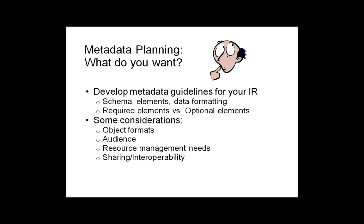When creating your guidelines, think about the schema, the metadata elements, and the metadata values you want. For example, do you have a preferred schema — would you prefer MODS for its richness, or something simple like Dublin Core? What specific elements do you want and why? How do you define those elements? For instance, should all contributors be considered authors or creators? Do you want to specify contributor roles, and if so, should those role designations be mandatory or optional? You may conclude that while you want certain data, it's not always available, so it has to be optional.